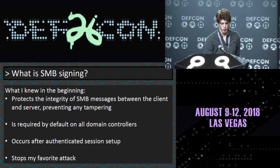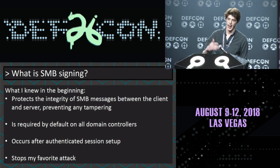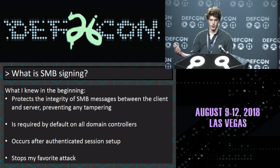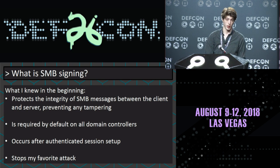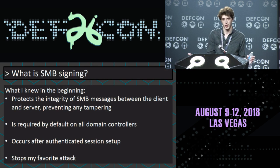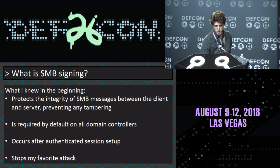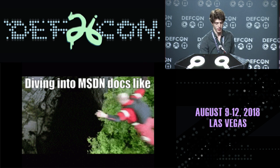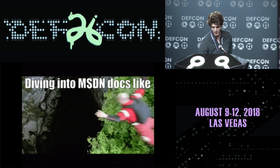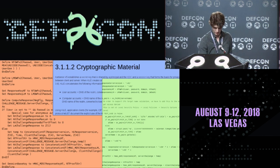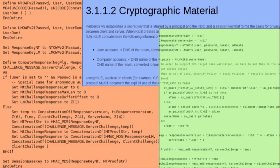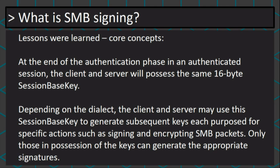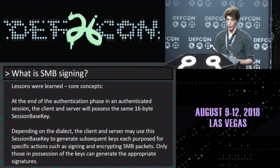I knew that it protects the integrity of SMB messages, because if we edit it after signing is enabled, we get screwed. It's required by default on DCs. It occurs only after the authentication process. And it stops my favorite attack — which is kind of a dick move. So I dove into the MSDN docs, and eventually I found the answer to what SMB signing actually is. And we're going to dive into that.